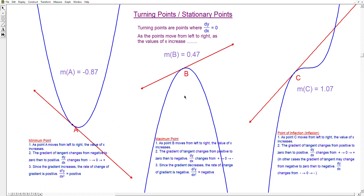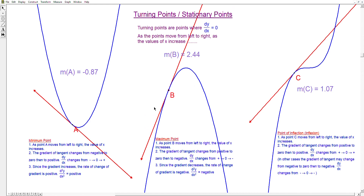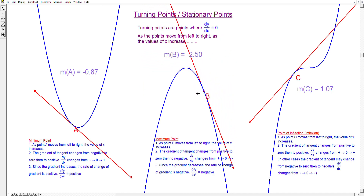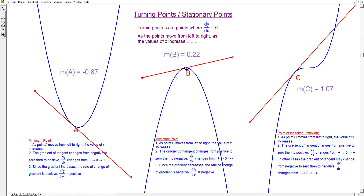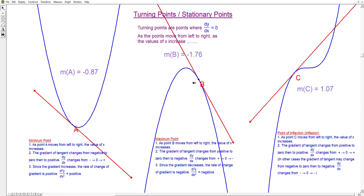Now let us look at graph B. B is a point on the graph — this graph has a maximum point. As point B moves from left to right, the gradient of the tangent at B changes. As the value of x increases, the gradient is positive and becomes less and less positive. At one point the gradient is zero — that is the turning point. After the turning point, the gradient becomes more and more negative.